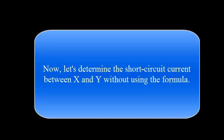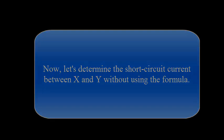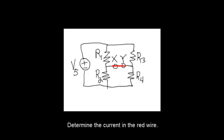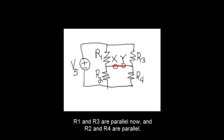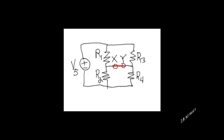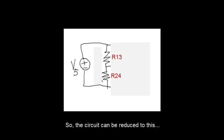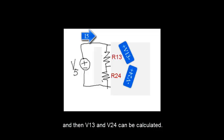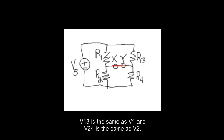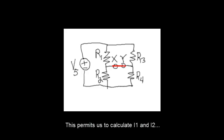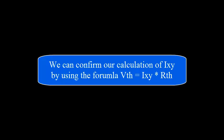Now let's determine the short circuit current between X and Y without using the formula — determine the current in the red wire. R1 and R3 are now in parallel, and R2 and R4 are in parallel, so the circuit can be reduced. Then I5 can be calculated, and then V13 and V24 can be calculated. V13 is the same as V1, and V24 is the same as V2. This permits us to calculate I1 and I2, and finally IXY can be calculated after we know I1 and I2. We can confirm our calculation of IXY by using the formula: V Thevenin equals IXY times R Thevenin.